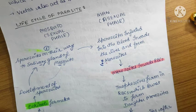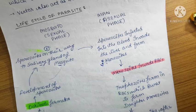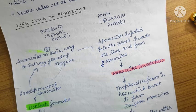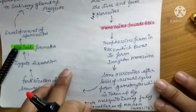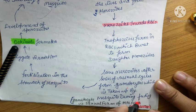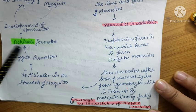The merozoites get converted into trophozoites inside the RBC, which then form daughter merozoites. After a series of asexual divisions, gametocytes are formed in the human host. The gametocyte is the sexual form of the malarial parasite and is taken up by the mosquito during feeding.